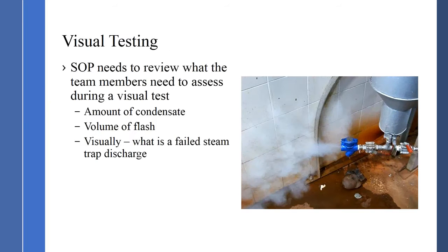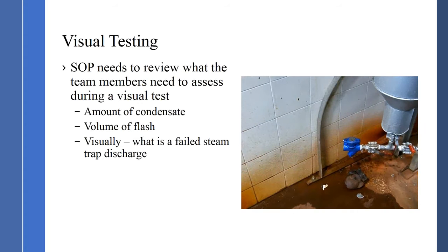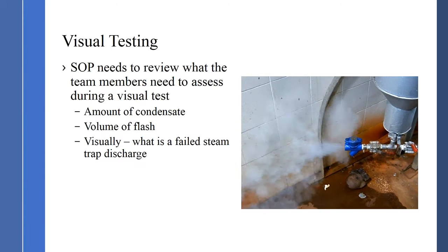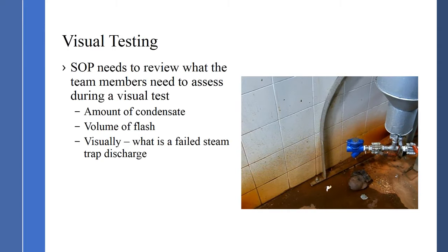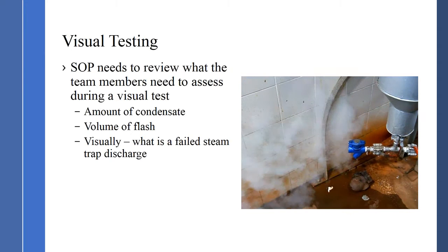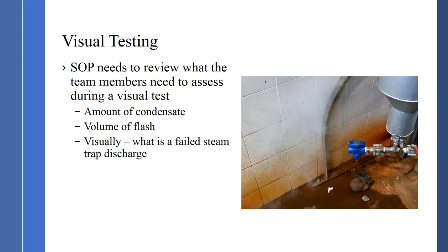Visual testing also checks whether the discharge is open to atmosphere — if so, you can visually see if the steam trap is working properly. Team members need to understand that at higher pressures, more flash steam is generated. The key is understanding whether the steam trap is discharging flash steam or blowing live steam through during its cycle process. It takes experience, but the more you do it, the more proficient you get. Visually, if the steam trap is blowing through completely, everyone can tell that; distinguishing flash steam from live steam leakage requires more training.